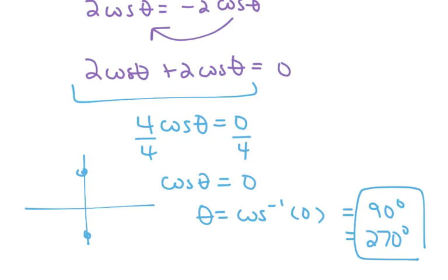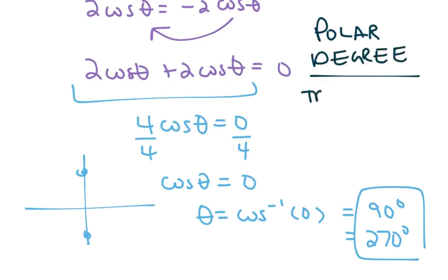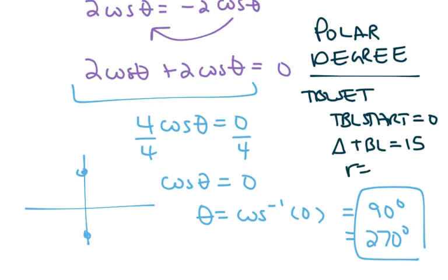Now, if you want to do this in your calculator, make sure you're in polar mode. Make sure you're in degree mode. And then, under your table set, which is second window, start your table, so table start at 0, and make your delta table 15.